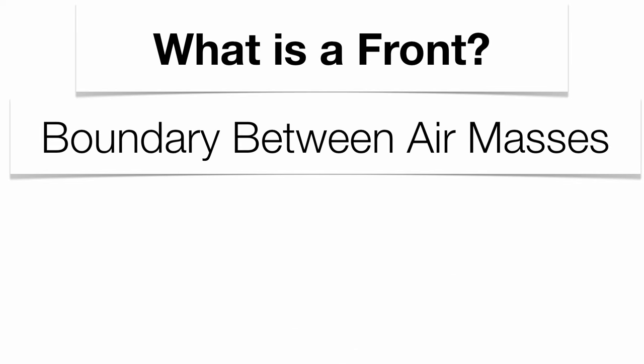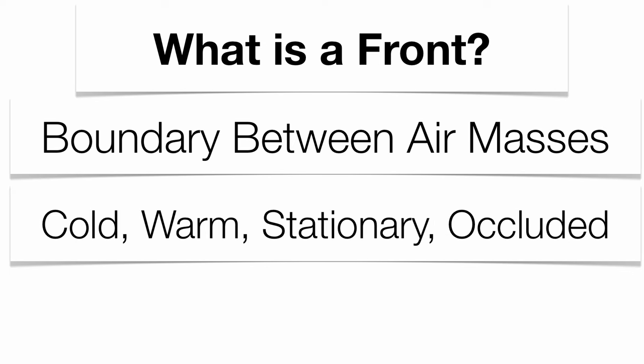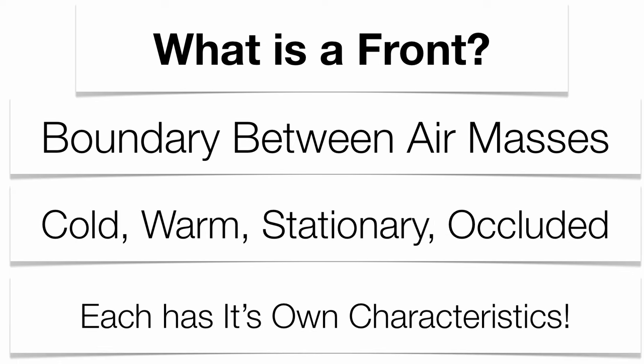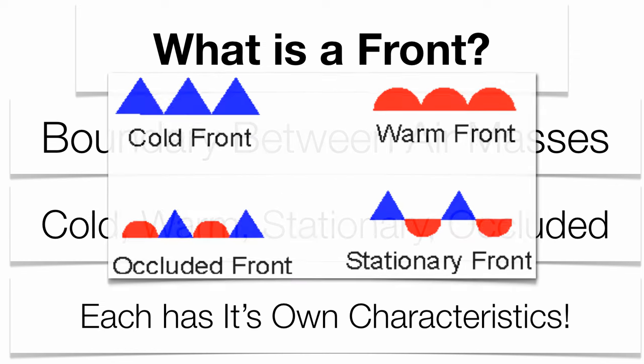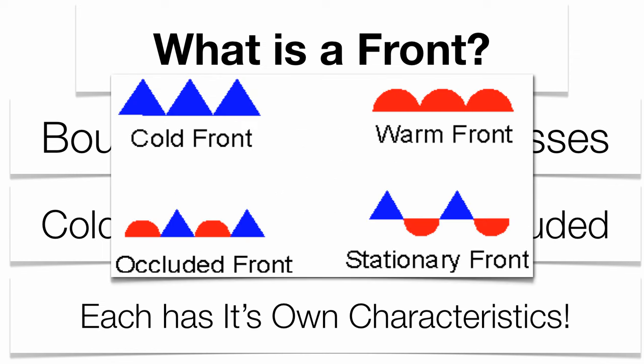A front is a boundary between two air masses, and we have cold, warm, stationary, and occluded fronts. Each front has its own individual characteristics. The symbols are found on page 13 in your reference table, and the symbol itself tells you the direction of motion. Cold, occluded, and warm fronts are moving in some direction. Stationary fronts don't move because you get air masses colliding with each other in opposite directions.